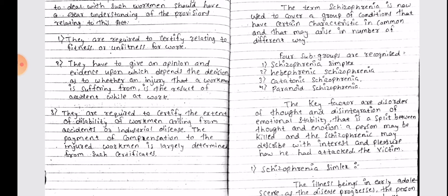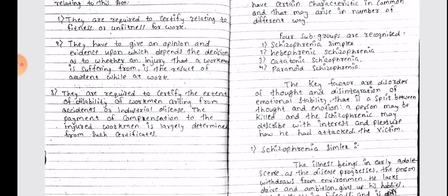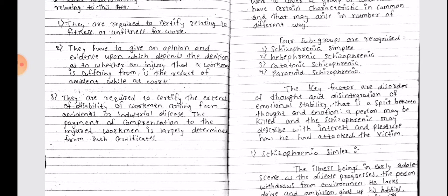They have to give an opinion and evidence upon which depends the decision as to whether an injury that the workman is suffering from is the result of the accident while at work. They are required to certify the extent of disability of workmen arising from accidents or industrial disease. The payment of compensation to the injured workmen is largely determined from such certificates.